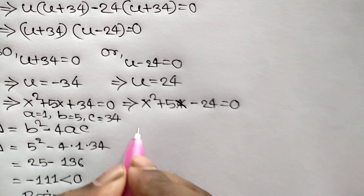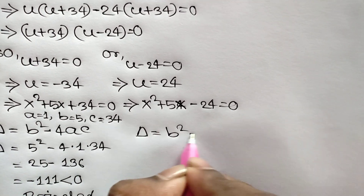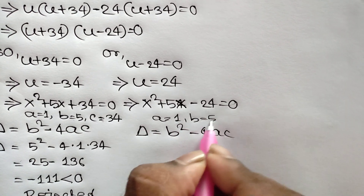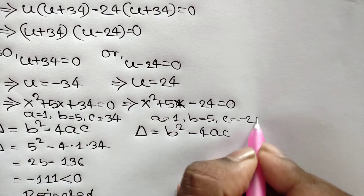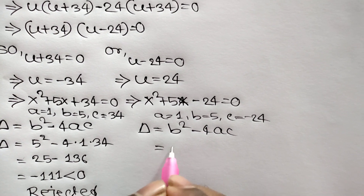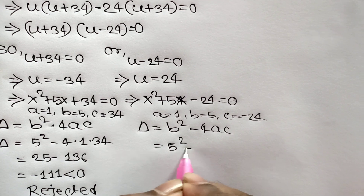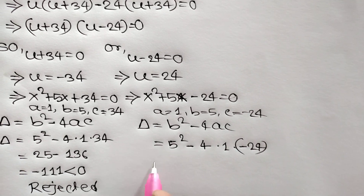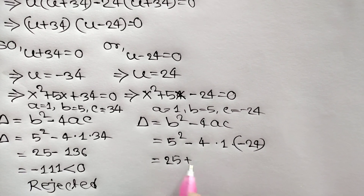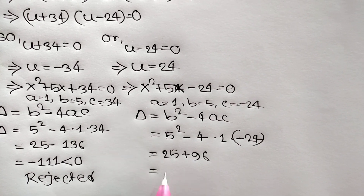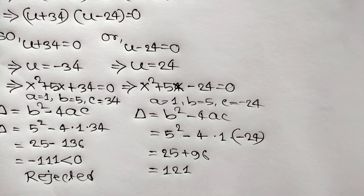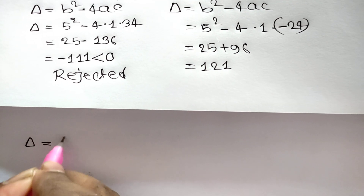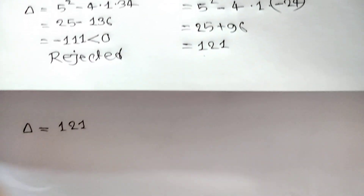For u equals 24: x²+5x−24 equals 0. The discriminant Δ equals b²−4ac equals 25−4(1)(−24) equals 25+96 equals 121.